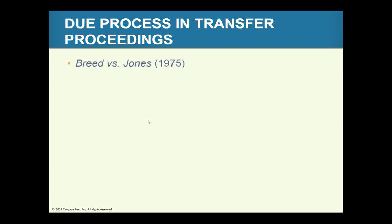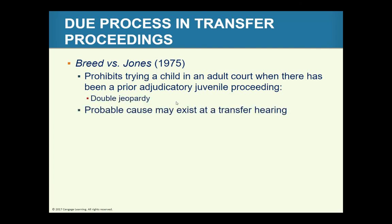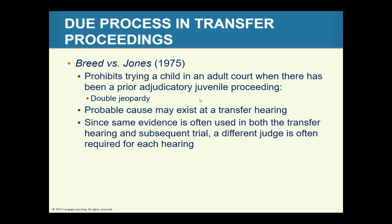There is other important case law as well. In Breed v. Jones, the court prohibited trying a child in adult court when there has been a prior adjudicatory juvenile proceeding — double jeopardy applies in this context. Probable cause may exist at a transfer hearing, and since the same evidence is often used in both the transfer hearing and the subsequent trial, a different judge is often required to ensure no deception from the judicial bench.